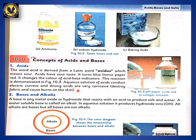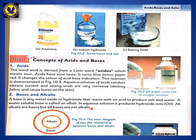Besides acids, you have bases and alkalis. A base is any metal oxide or hydroxide that reacts with an acid to produce salt and water. A water-soluble base is called an alkali. In aqueous solution, it produces hydroxide ions. All alkalis are bases, but not all bases are alkalis. When a metal oxide or hydroxide reacts with an acid, it makes salt and water. That is the definition of a base.